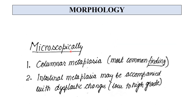The microscopic feature seen is columnar metaplasia, which is the most common finding — the replacement of squamous epithelium by metaplastic columnar cells. We also see goblet cells and Paneth cells. The goblet cell is a very important point because goblet cells are diagnostic of Barrett's Esophagus.